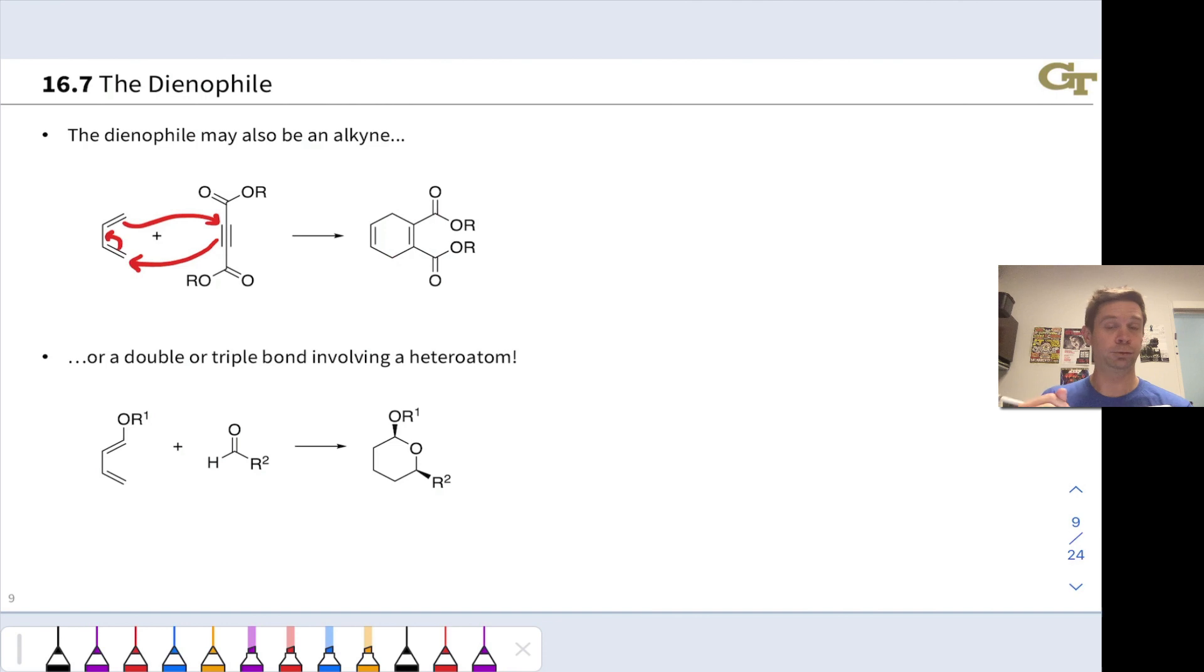This means we end up with an extra double bond in the product, and now we have not a cyclohexene, but a 1,4-cyclohexadiene with two double bonds within the structure. And this can be useful because these double bonds can be used for further chemistry.